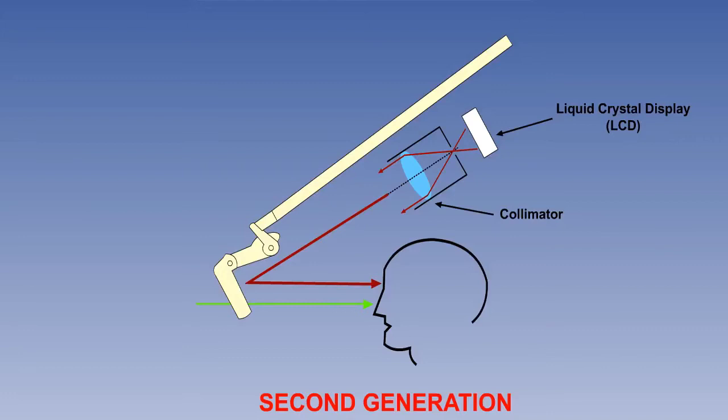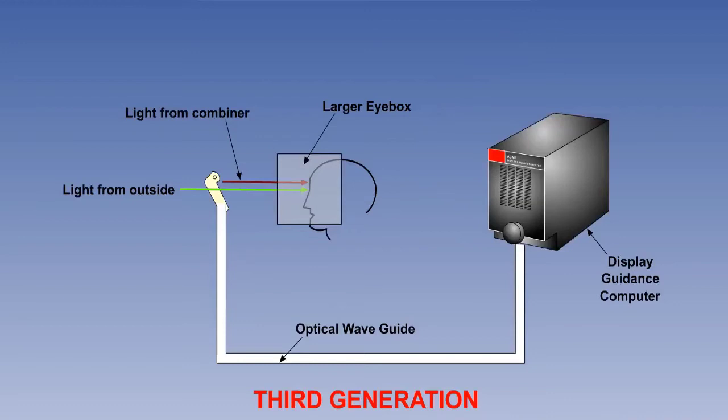Third generation systems remove the need for the overhead projector. Optical waveguides produce the image directly in the combiner. With these systems, eye reference point is less critical since the eye box is larger. These are just emerging in aircraft.